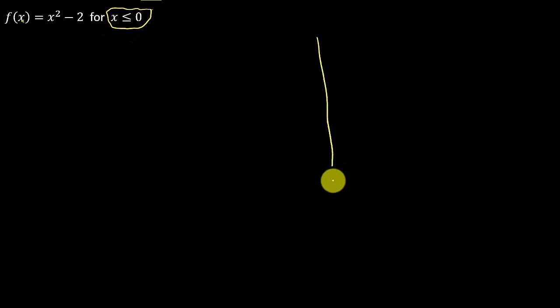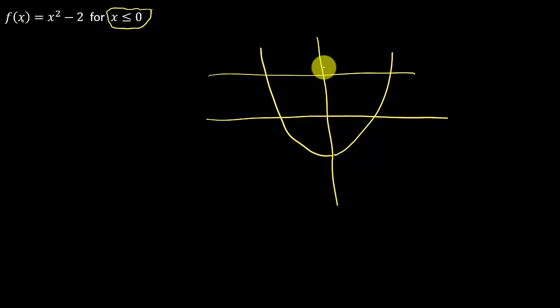So if we look at the graph of this function, that's going to look something like this. It's a parabola that opens up. Here's the vertex. Alright, so if you look at this, you can see that if we draw a horizontal line through it, it intersects this graph in more than one spot.